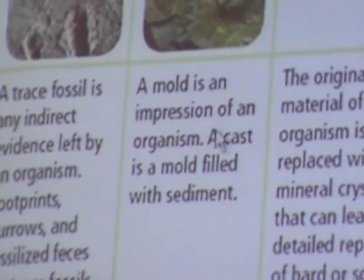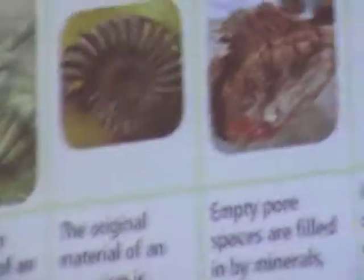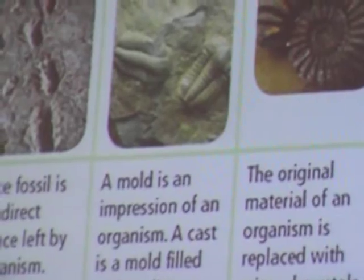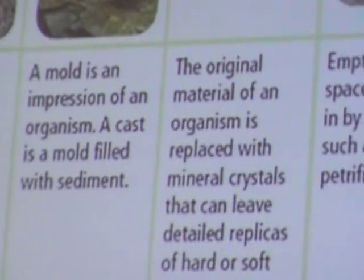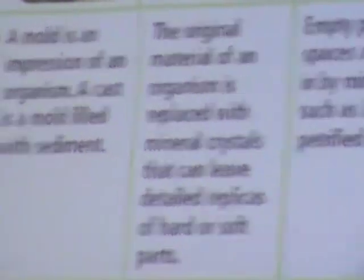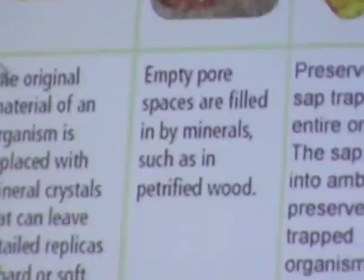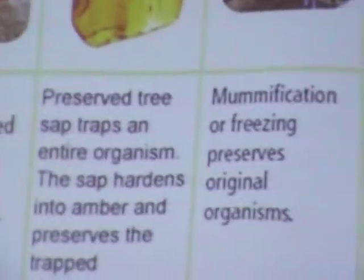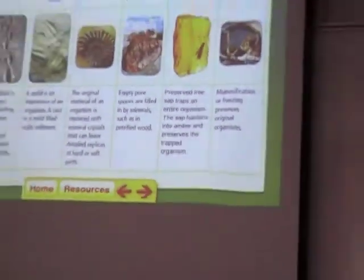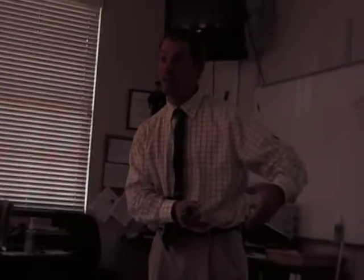Molds and casts are impressions of an organism. Something makes a dent in the mud, the mud turns to stone, and then the dent fills in with sand — that forms a cast. Sometimes you step in mud and the footprint stays there, and given the right circumstances, if it's not bothered, that mud can turn to stone.